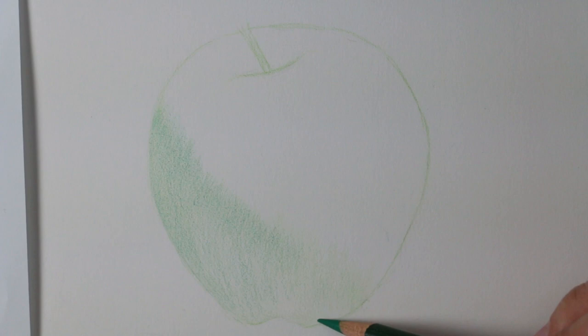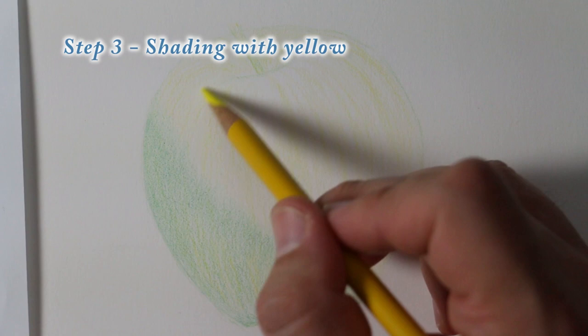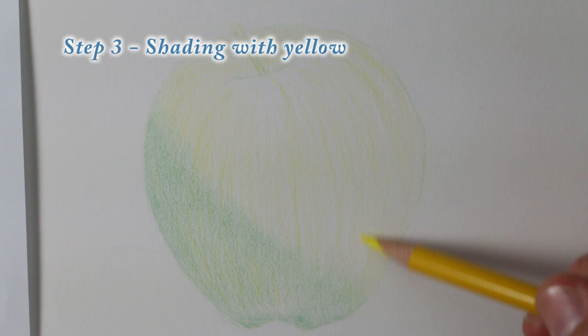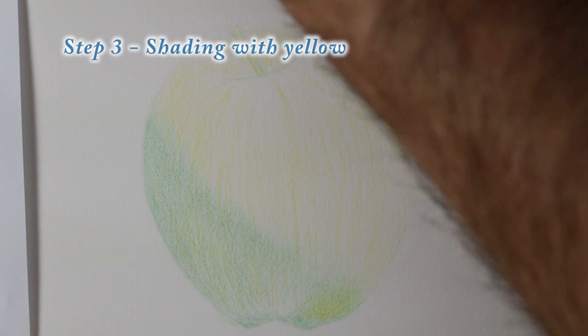And then I go back in with yellow and I use the yellow on the entire drawing. I use yellow in every piece of the apple just so there's some continuity.